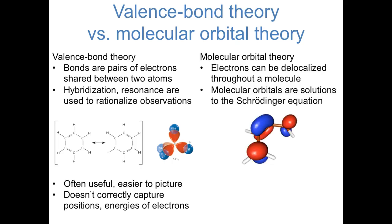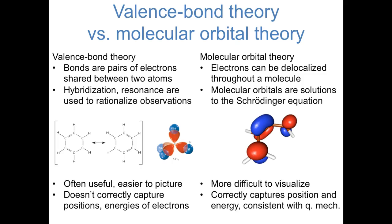In contrast, we're going to talk in this course about molecular orbital theory, in which we acknowledge that electrons can be delocalized throughout an entire molecule, and we find molecular orbitals as the eigenfunctions of the Schrodinger equation. Molecular orbital theory is more difficult to visualize and more difficult to do on pencil and paper, but it's also more complete. Molecular orbital theory correctly captures the positions and energies of electrons, and it's consistent with quantum mechanics. So molecular orbital theory is the viewpoint that we're going to discuss in this course.